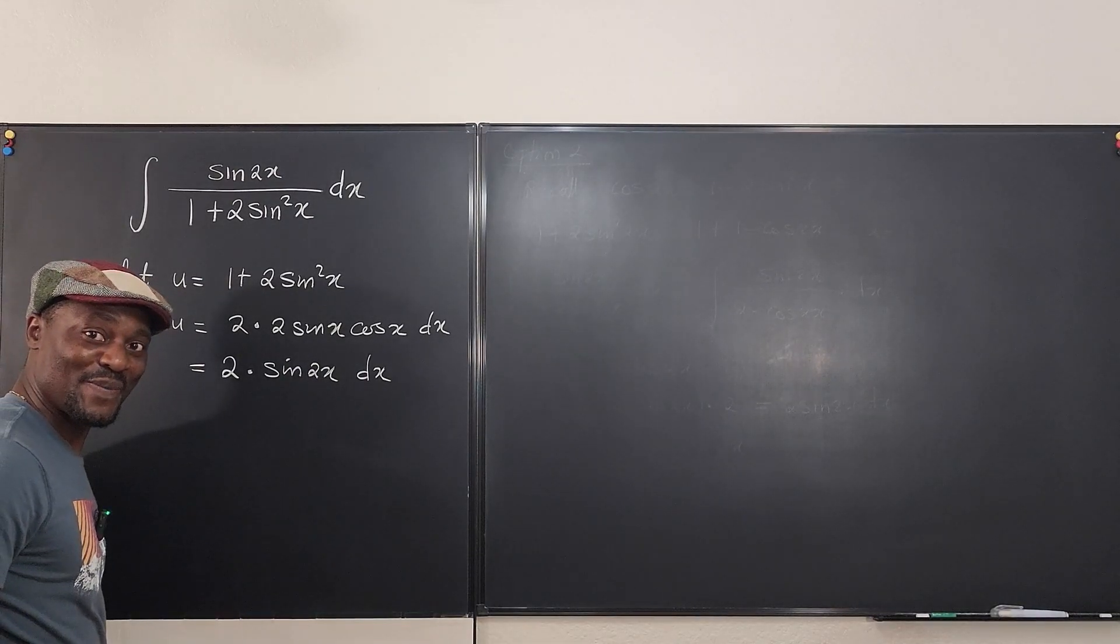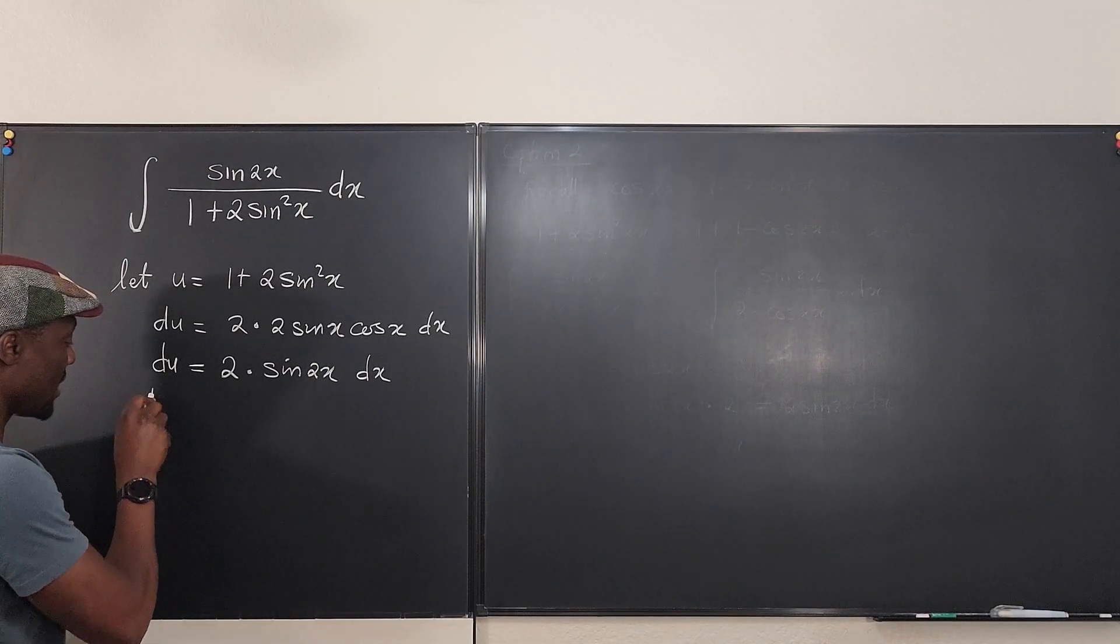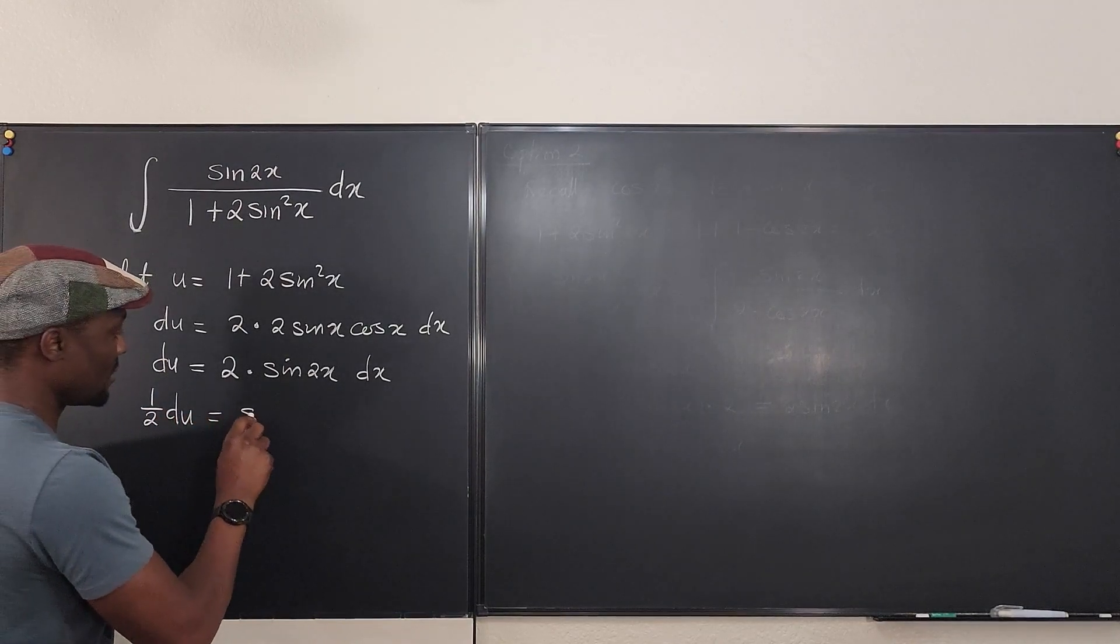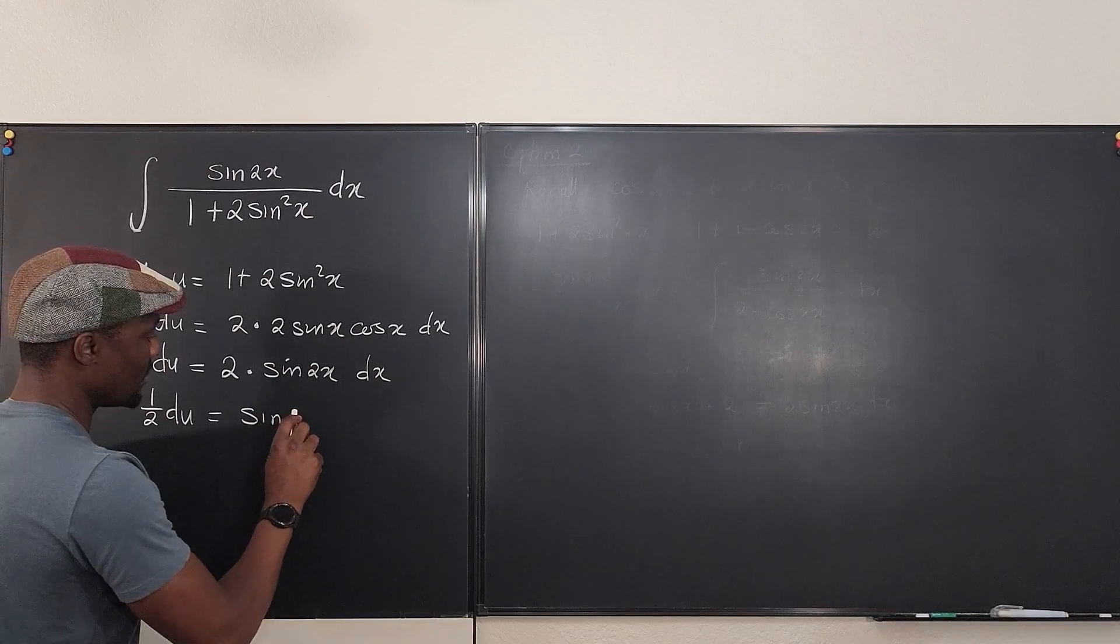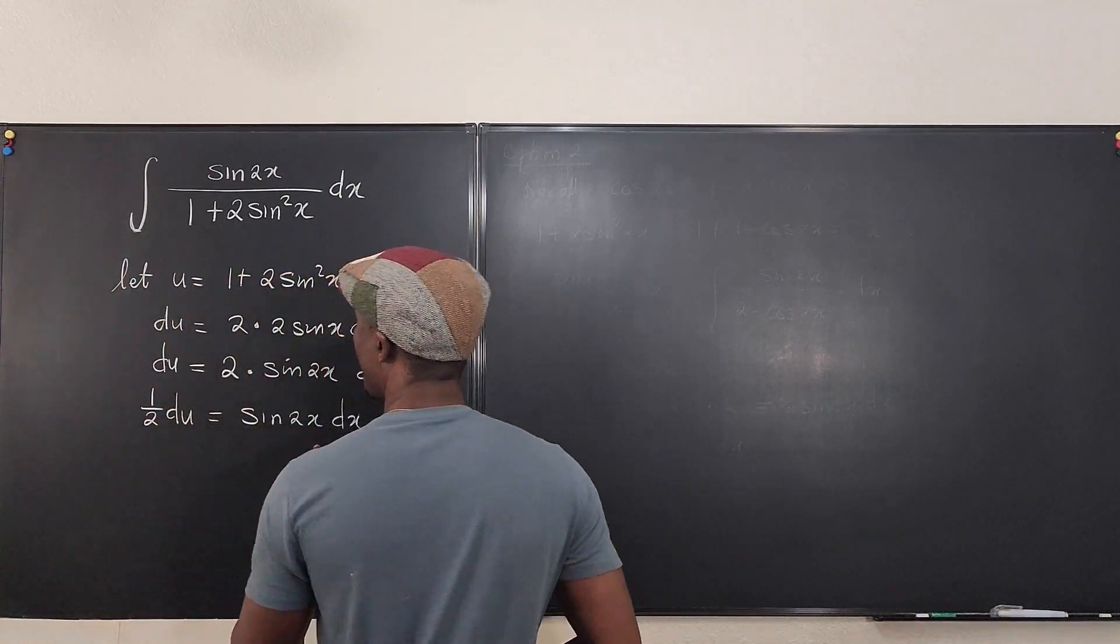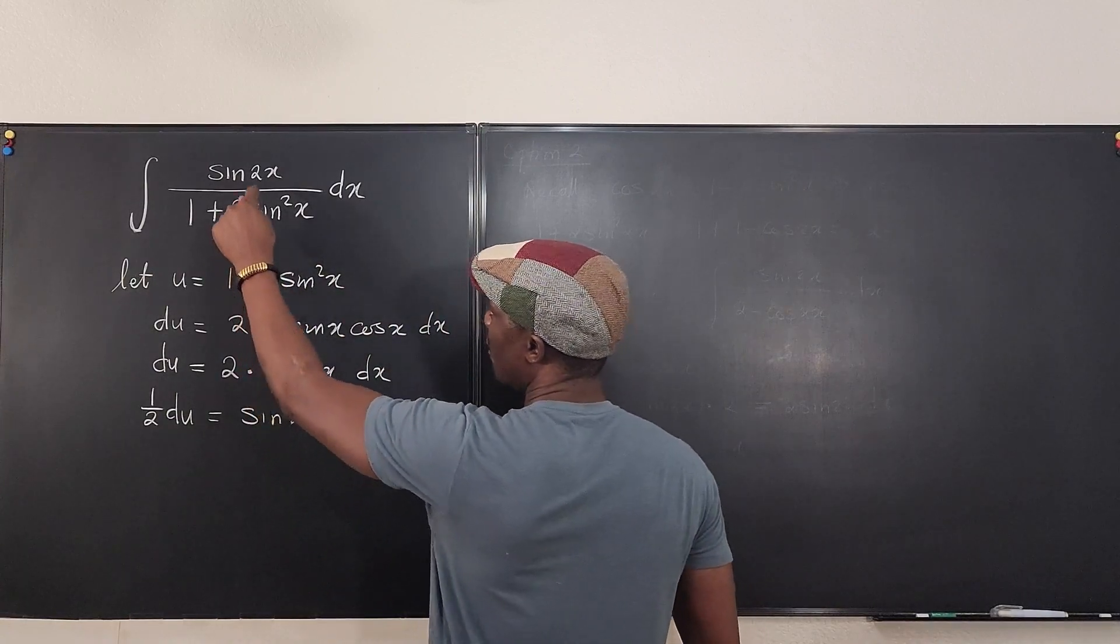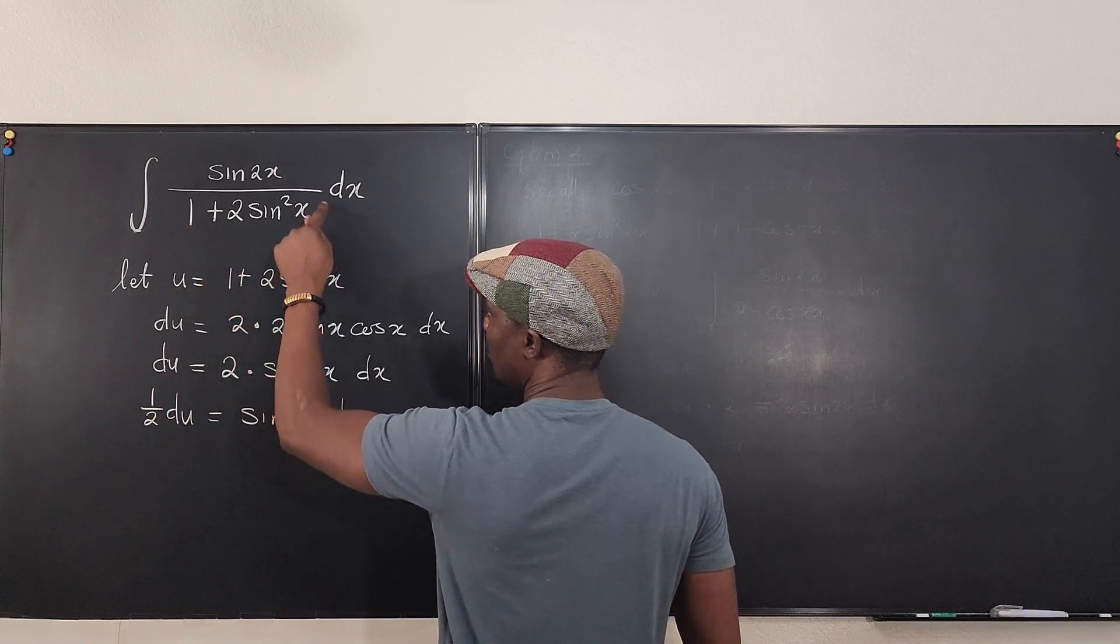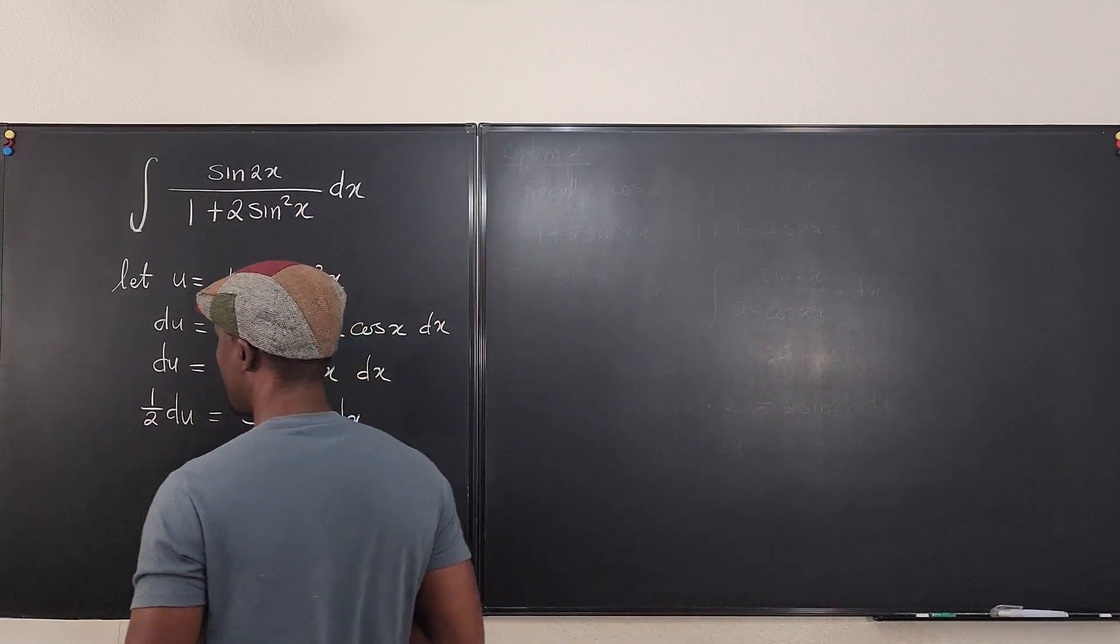Just make the denominator my U. If I divide both sides by 2, I'm going to have half du is equal to sine 2x dx. So in the integral, I can actually go back and replace sine 2x dx with half du and write u for this entire expression.